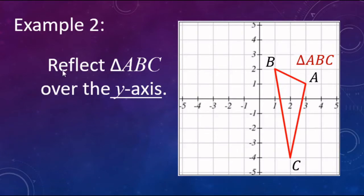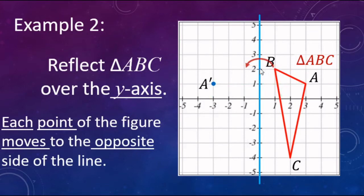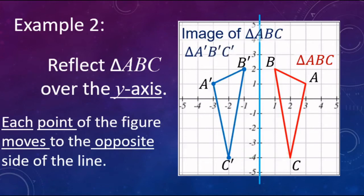When we go to do this on actual shapes, we're going to reflect triangle ABC over the y-axis. Each point is going to move to the opposite side of the line. Starting with point A, which is three units to the right — its reflection is three units to the left, so A prime goes there. B is one unit to the right, so B prime is one to the left. And C is two units to the right, so C prime is two to the left. Connect the dots — there's our reflected image of triangle ABC: A prime, B prime, C prime, reflected over the y-axis.